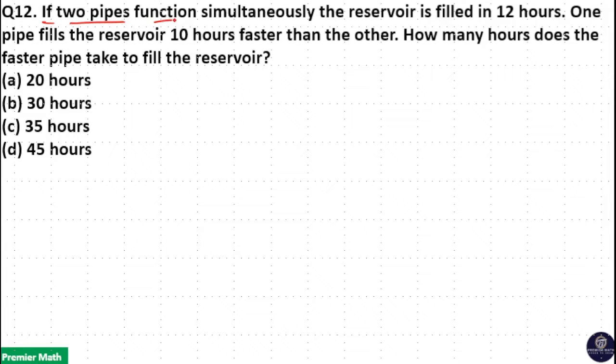If two pipes function simultaneously, the reservoir is filled in 12 hours. One pipe fills the reservoir 10 hours faster than the other. How many hours does the faster pipe take to fill the reservoir?